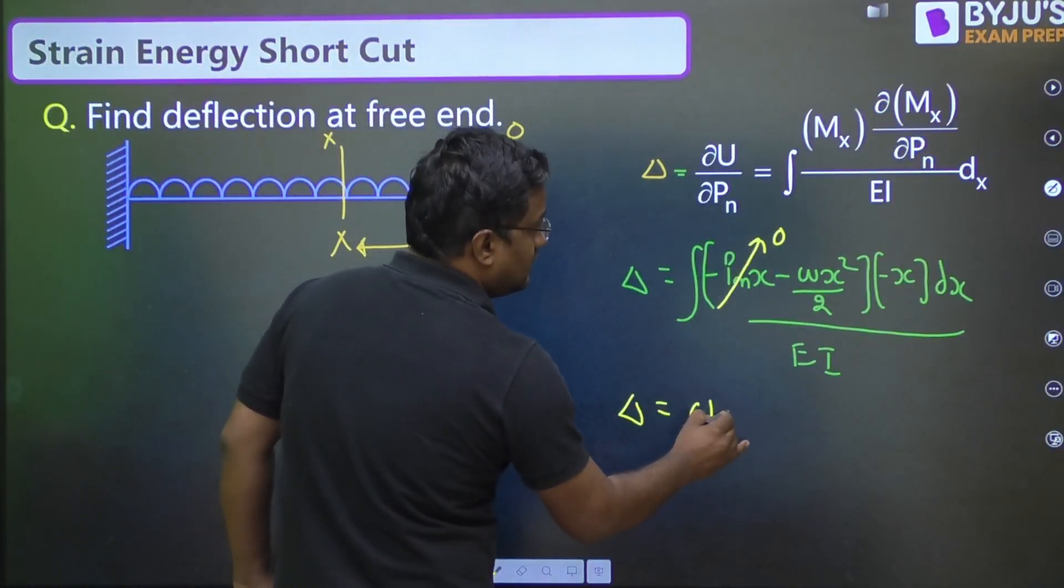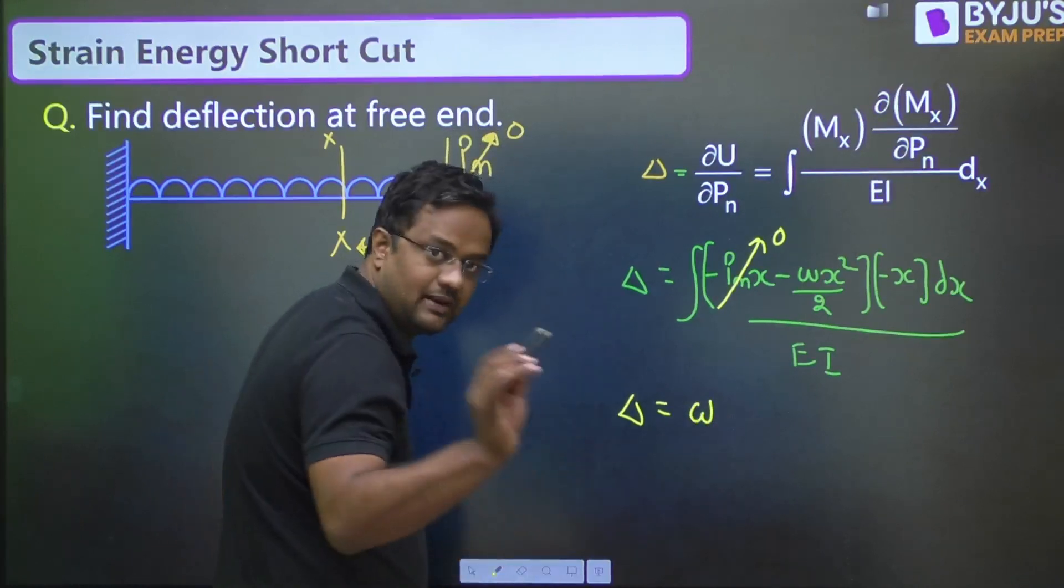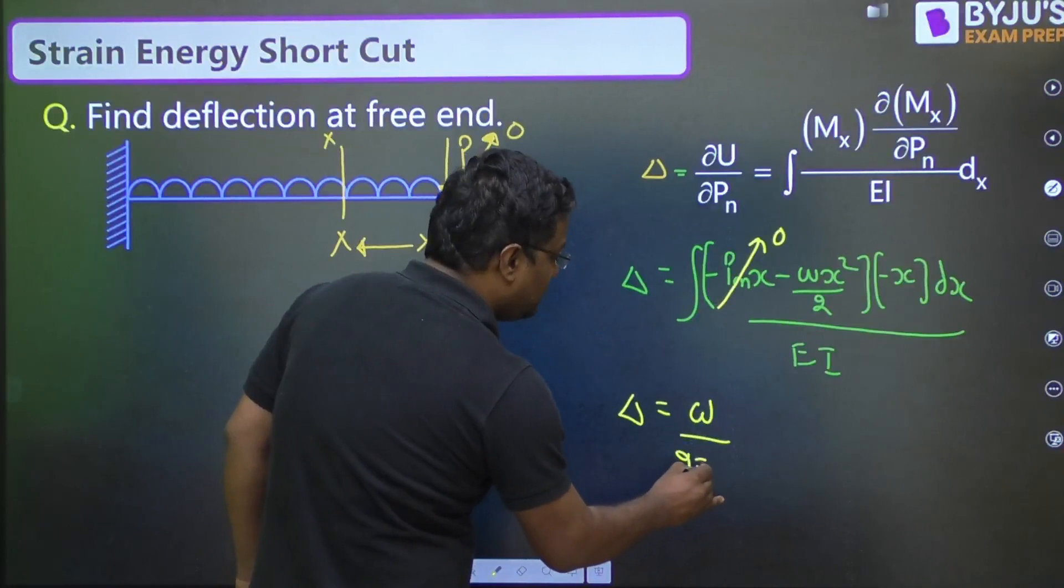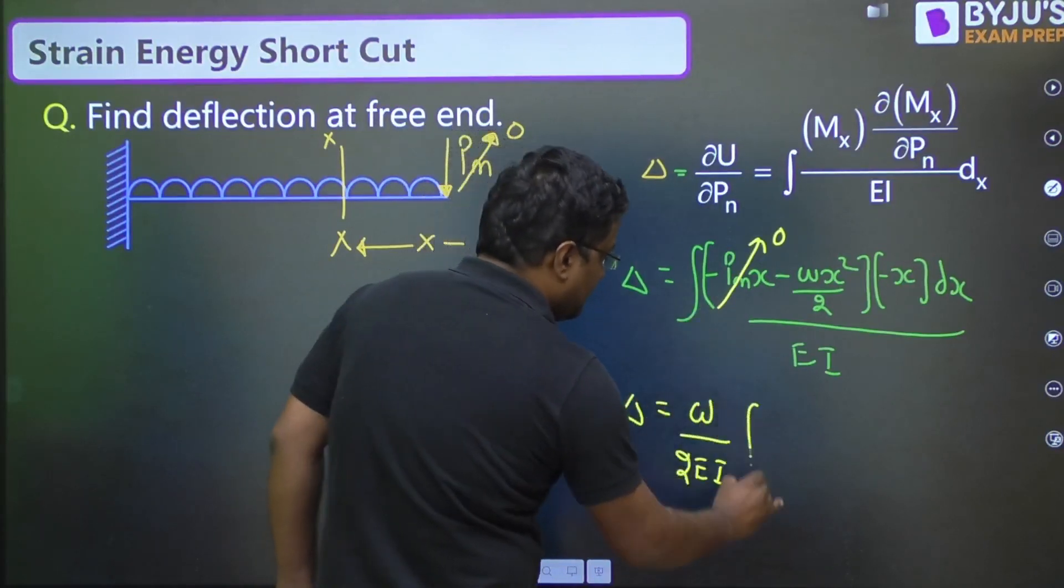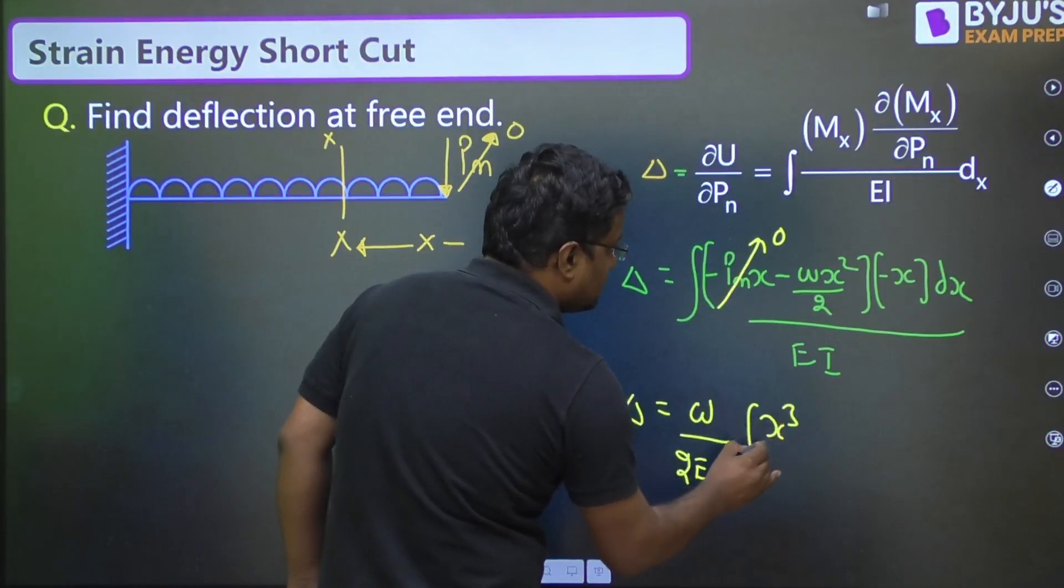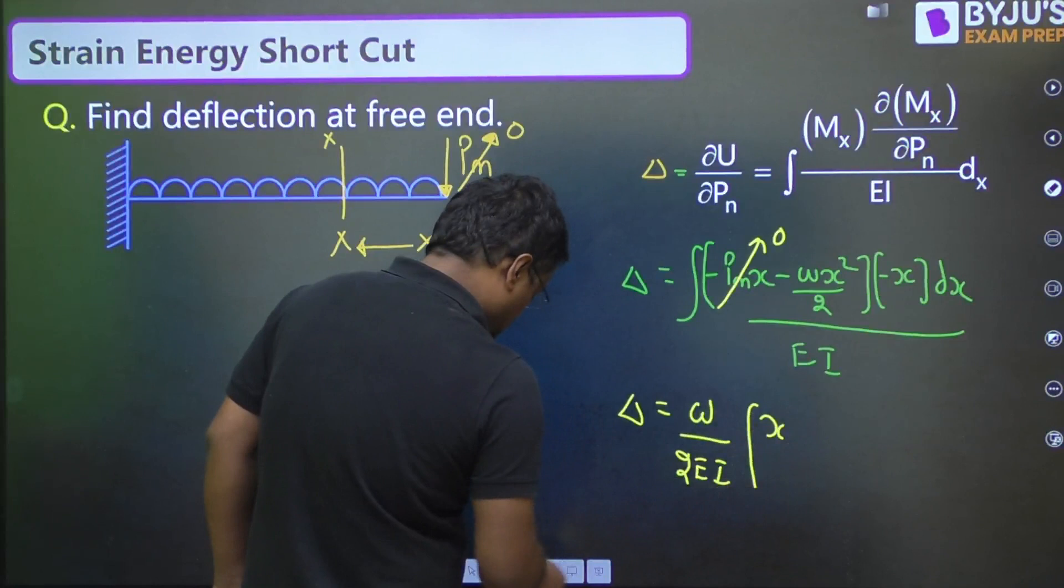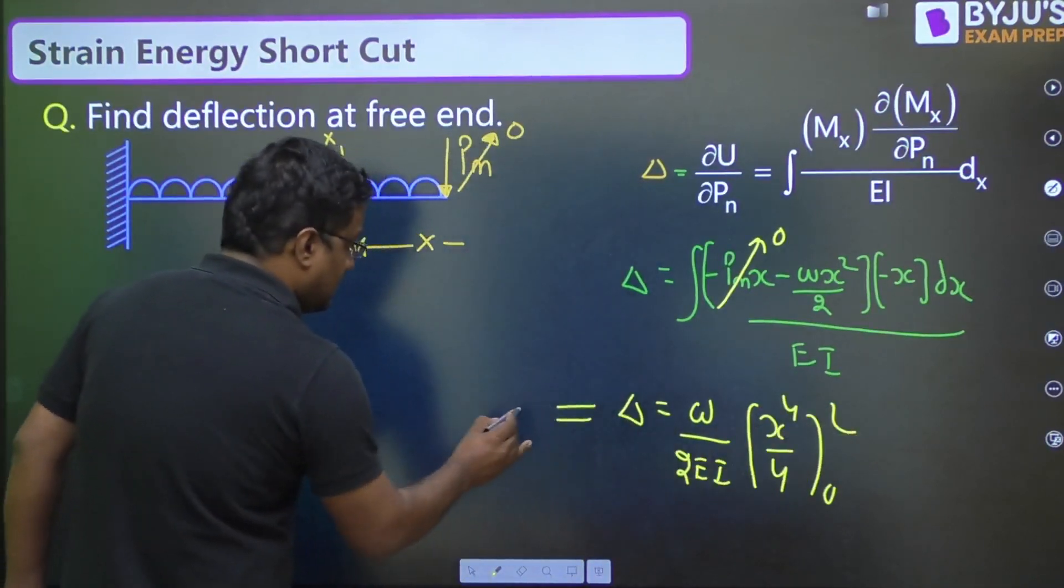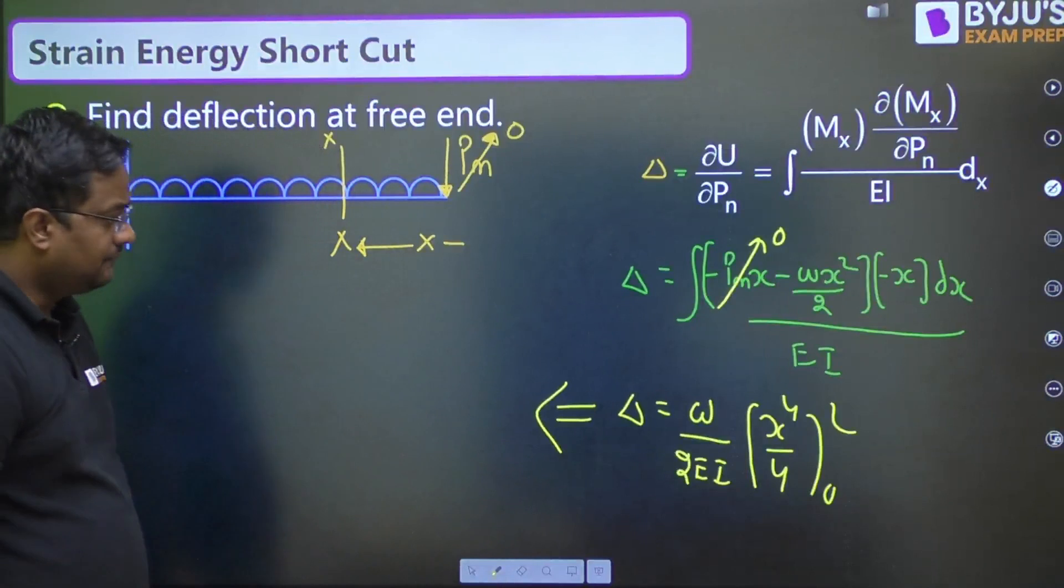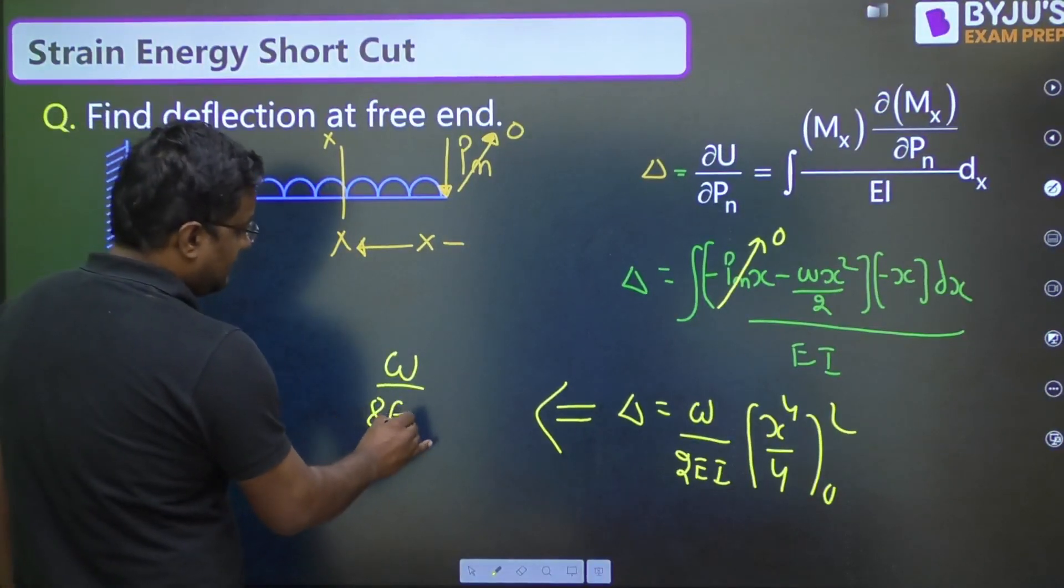So, delta is W upon 2EI. X square integration will be X cube. X cube integration will be X4 by 4. Putting the value 0 to L. Now, putting the value 0 to L, it will be WL4 by 8EI.